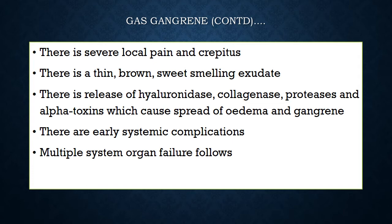Signs of gas gangrene include severe local pain and crepitus on palpation — a bubble-bursting feeling under the skin in the subcutaneous fat. There is a thin, brown, sweet-smelling exudate from the wound. These bacteria release hyaluronidase, collagenases, proteases, and alpha toxins into the tissues, which cause spread of edema, gangrene, compromise of blood supply, and creation of an anaerobic environment. This spreads rapidly within hours.